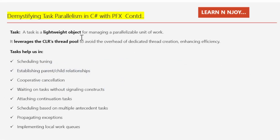Now let's talk about what a task is. A task is a lightweight object for managing a parallelizable unit of work. It leverages the CLR's thread pool — Common Language Runtime thread pool — avoiding the overhead of dedicated thread creation, thereby enhancing efficiency. We can leverage tasks for various activities such as scheduling tuning, establishing parent-child relationships, cooperative cancellation, waiting on tasks without signaling constructs, attaching continuation tasks, scheduling based on multiple antecedent tasks, propagating exceptions, and implementing local work queues.